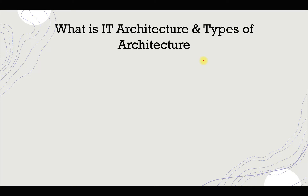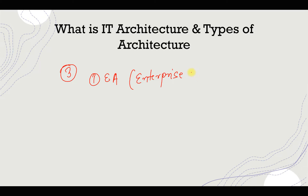Technically, we need to define what components come into picture. Before going into that, we need to understand what types of architecture we have. In general, we have three types of architecture. The first is enterprise architecture, which is actually a blueprint of your company that defines everything — including your solutions, functionalities, business strategies, and technologies.